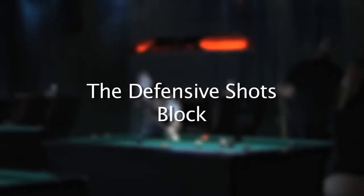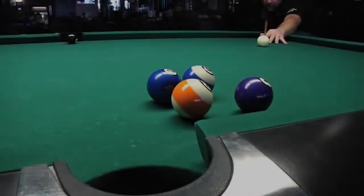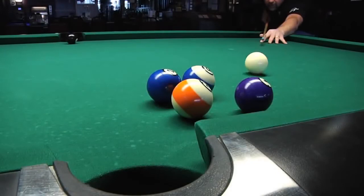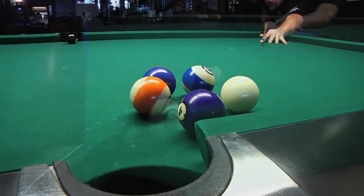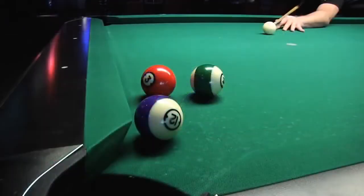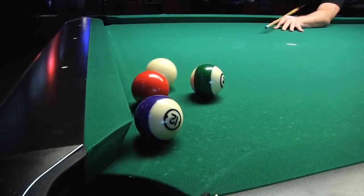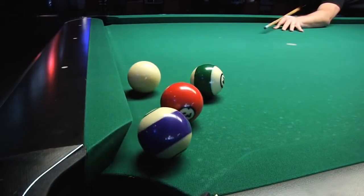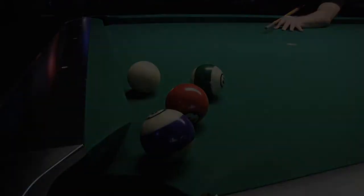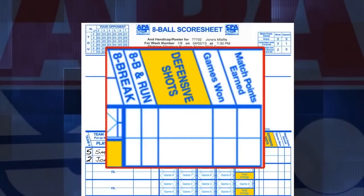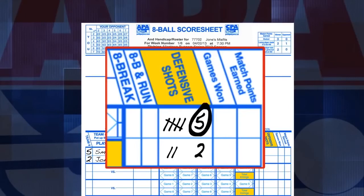Intentionally missed shots are indicated in the defensive shots block. A defensive shot should be marked for a player who has no intention of actually pocketing their ball on any given shot. In this illustration, Joe had two defensive shots and Steve had five. At the end of the match, write the total number of defensive shots and circle the number.